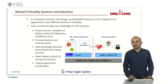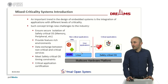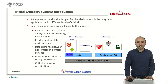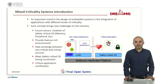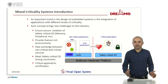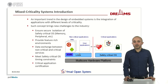An important trend in the design of embedded systems is the integration of applications with different levels of criticality. As you can see on these pictures, the goal is to run a safety-critical OS containing different critical applications such as real-time, secure, and safety applications, along with general purpose operating systems such as Linux, which contains virtualization extensions. Such concepts bring new challenges: we have to ensure isolation of the safety-critical OS from memory and peripherals, provide shared memory to exchange data between different operating systems, and meet safety-critical OS timing constraints for real-time applications, which generally require certification.